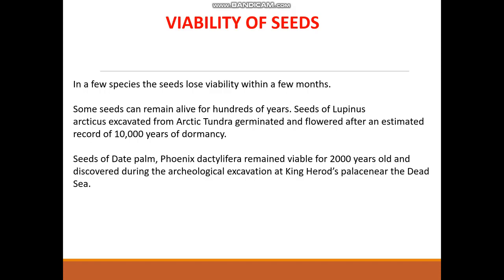The viability of seeds varies. Some seeds can remain viable only for a few months, whereas others can live for hundreds of years. One example is Lupinus arcticus — seeds excavated from arctic tundra germinated and flowered after a period of 10,000 years of dormancy. Another example is the seeds of date palm, Phoenix dactylifera, which remained viable for 2,000 years.